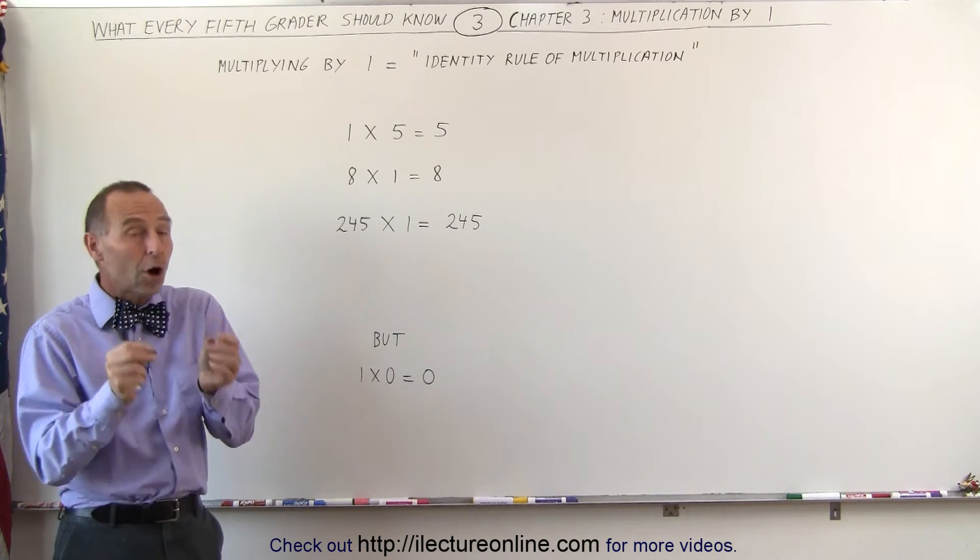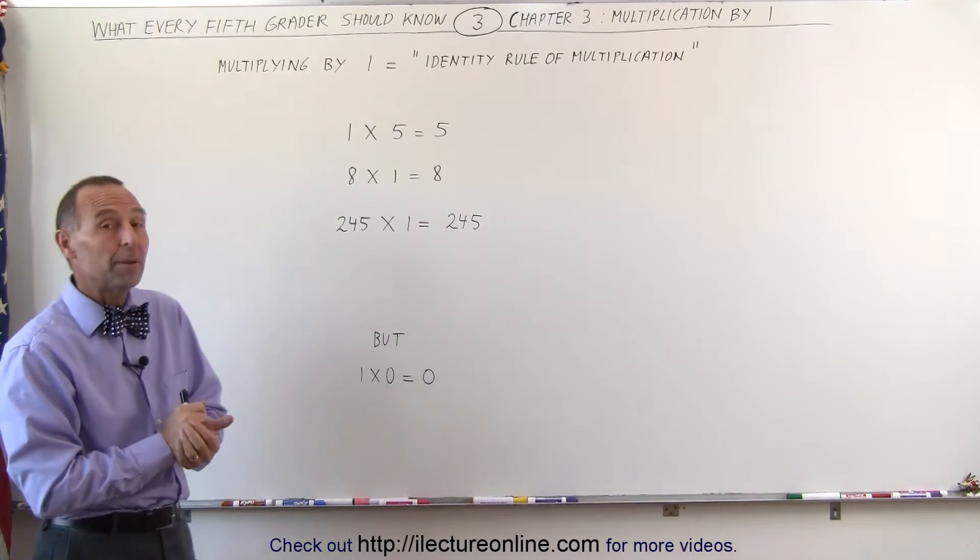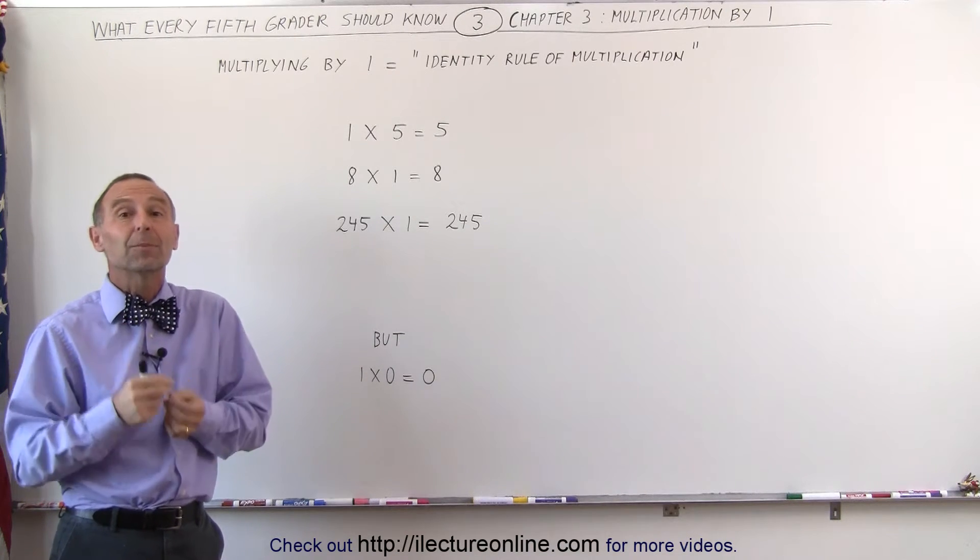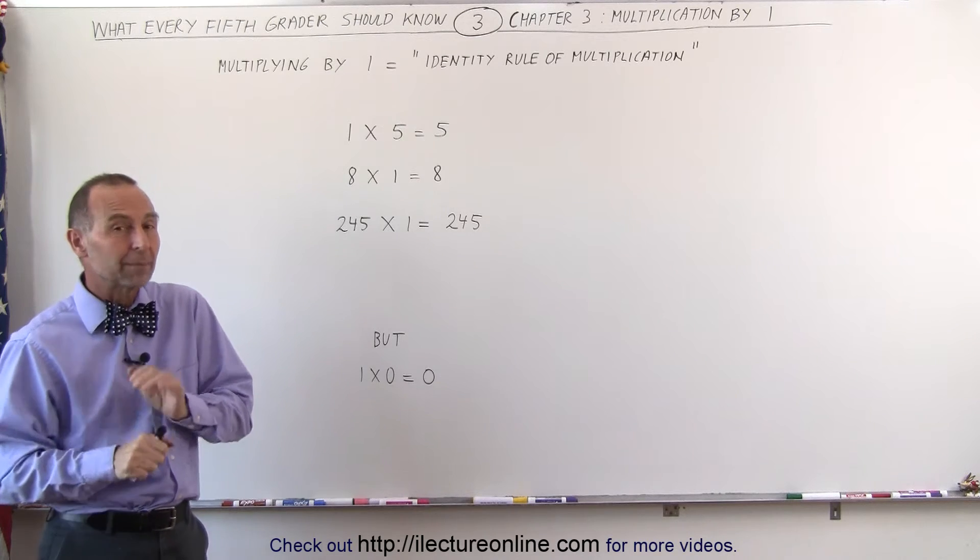Well, in mathematics we call it the identity rule of multiplication, which means in simple words that when you multiply by 1, you get the same number again, whatever the number is you're multiplying by 1.